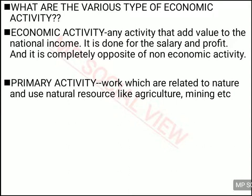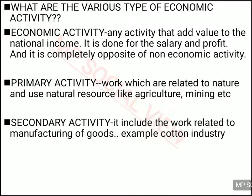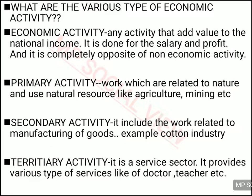Then there is secondary activity, which is related to the manufacturing sector, also called the industrial sector. In this, manufacturing of goods takes place — like the textile industry and the iron and steel industry. All these are examples of manufacturing industries and come under secondary activity. And then there is tertiary activity, also called the service sector, in which various types of services are produced — like the service of a teacher or a doctor. Whatever activity you do in the economy is divided into these three categories: primary activity, secondary activity, and tertiary activity.